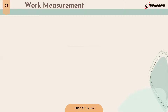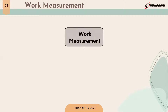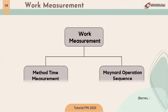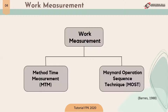Previously we already learned about direct work time measurement. Here we will learn about indirect measurement on pre-determined motion time systems. Indirect measurement is work time measurement made by looking for all the variables first and then calculating mathematically to obtain the measurement result.